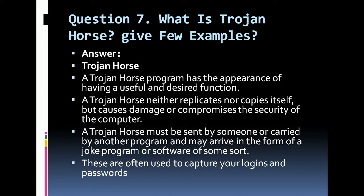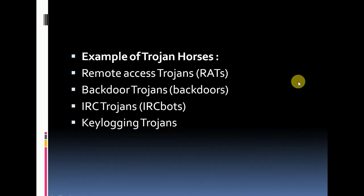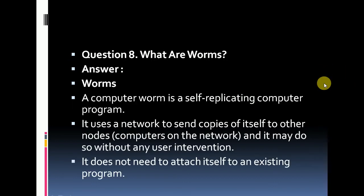Some examples of Trojan horses are: remote access Trojans, Bacta Trojans, IRC Trojans (also called IRC bots), and key logging Trojans. Those are some examples of Trojan horses. The next question asks: what are worms?